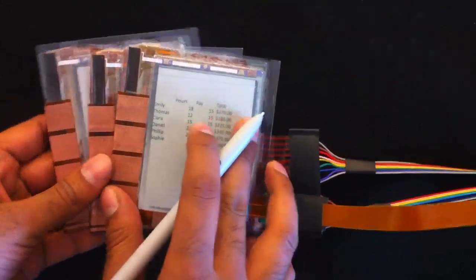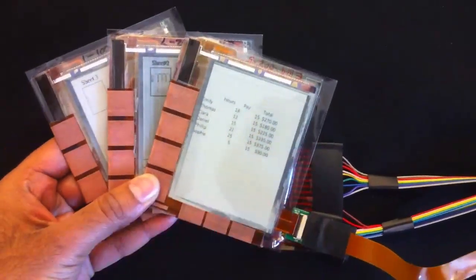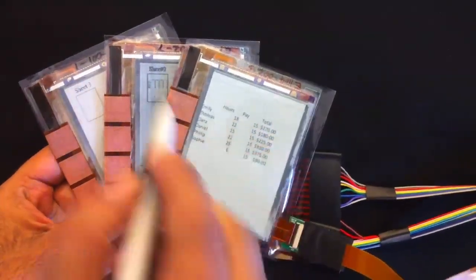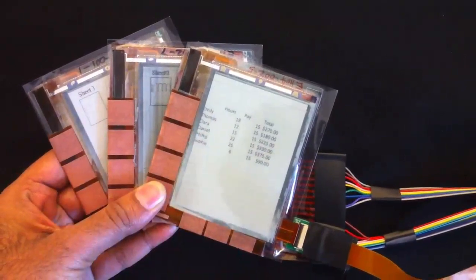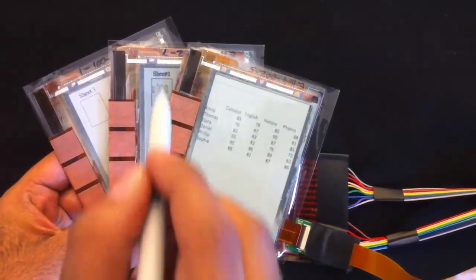Here, we see a spreadsheet application with multiple sheets. The user uses a fan of displays which allows the partially occluded displays to show thumbnails of the sheets in the spreadsheet.